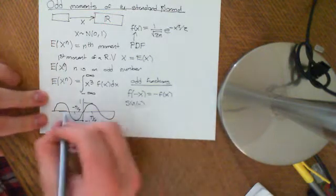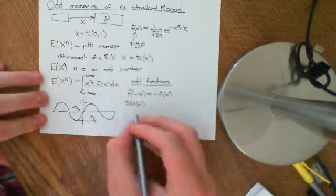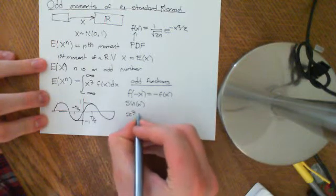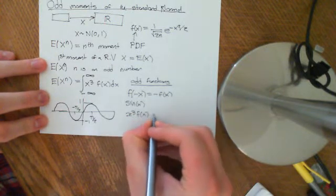Okay, so there's an example of a perfectly odd function. And this here, x cubed times f of x, is an odd function.